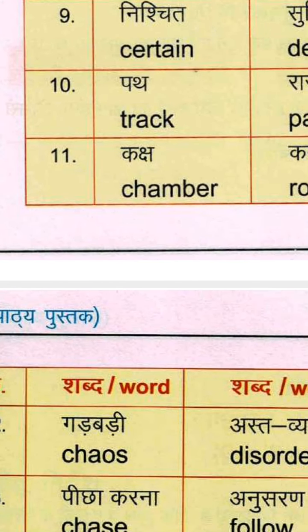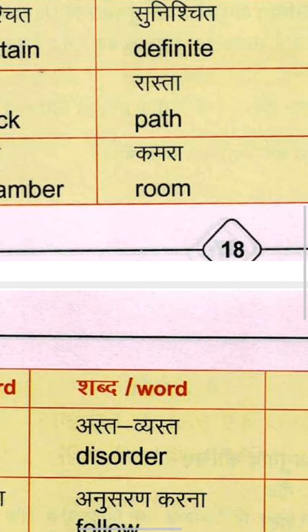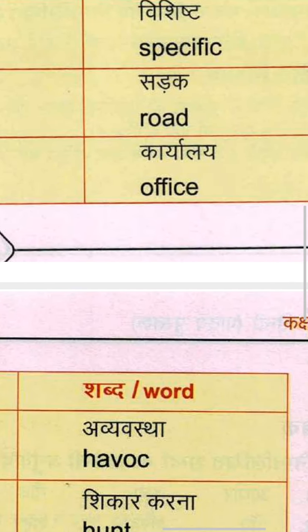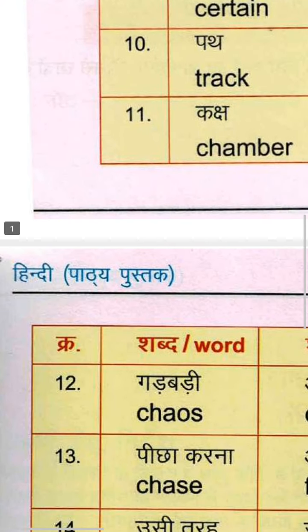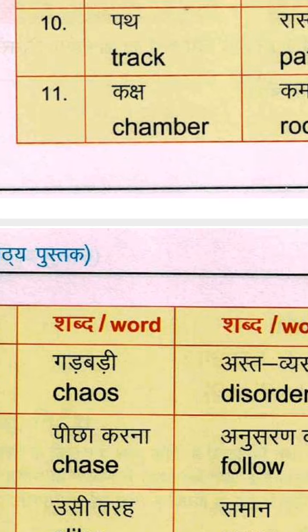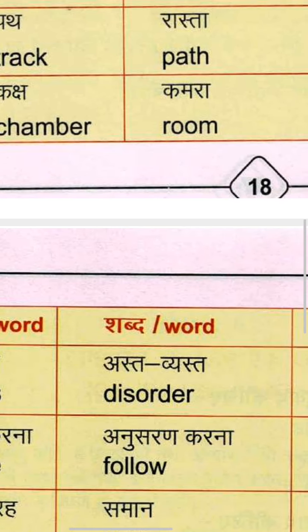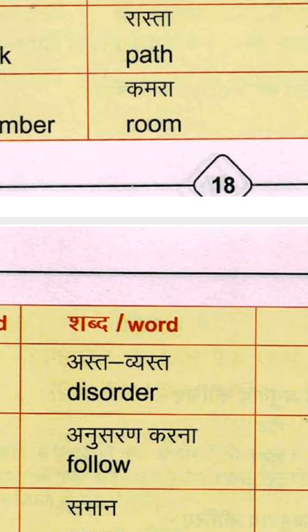Tenth group: Path means Track. Also Road — R-O-A-D, meaning Raasta. Eleventh group: Kaksha meaning Chamber — C-H-A-M-B-E-R. Also Room, meaning Kamra.